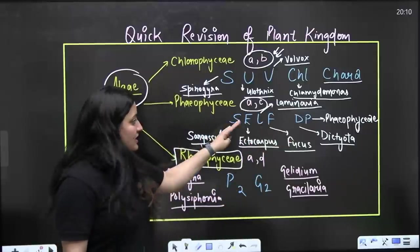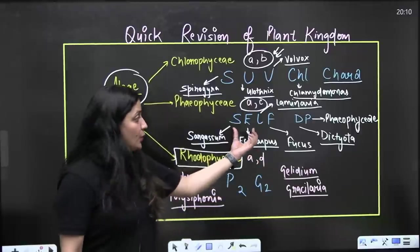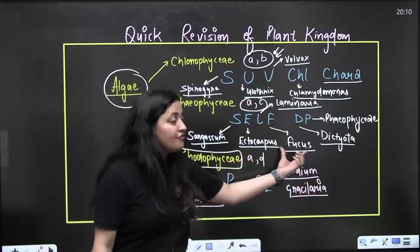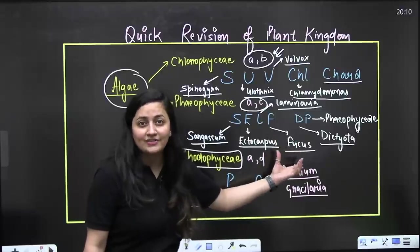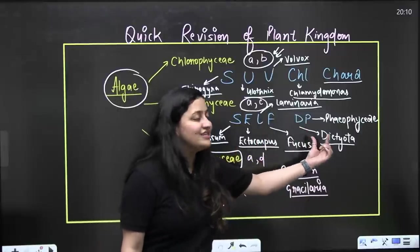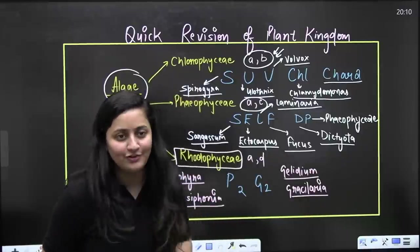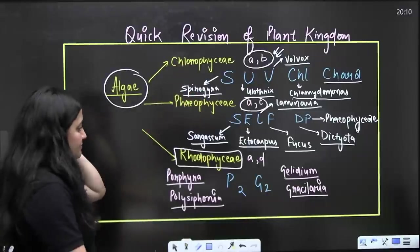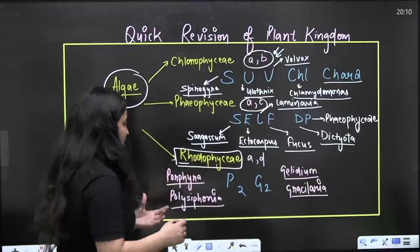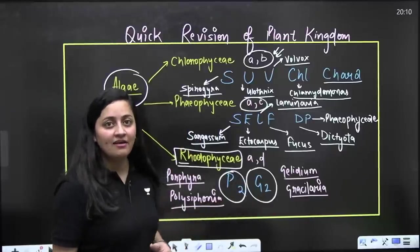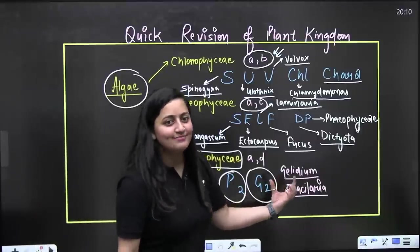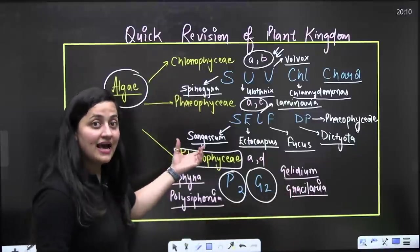For brown algae, the trick is 'SELF DP.' S stands for Sargassum, E stands for Ectocarpus — an exception having a haplodiplontic life cycle — L stands for Laminaria, which is edible, F stands for Fucus — another exception having a diplontic life cycle with air bladders. D stands for Dictyota, P stands for Padina. For red algae, the trick is 'P2G2': P for Porphyra, P for Polysiphonia, G for Gelidium, G for Gracilaria.